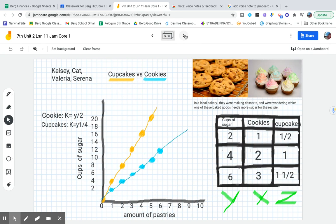And finally, Kelsey, Capillary, and Serena made a graph that includes two lines, cupcakes and cookies. K equals y divided by 2 and k equals y times 1/4, I believe is what that shows. The table shows cups of sugar, cookies, and cupcakes. Right, I see. So they're comparing cupcakes and cookies, I think both to sugar. Yes, that's what they're doing.